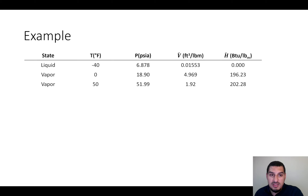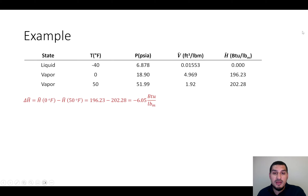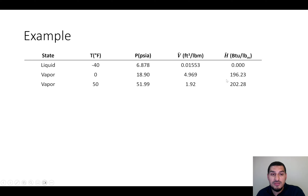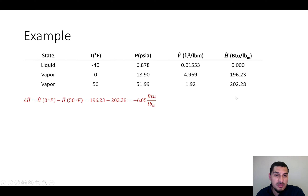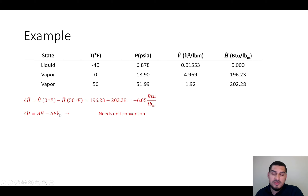The enthalpy equals zero at the reference state, so we identify it in the table. For the enthalpy difference when cooling from 50°F to 0°F: H1 is the enthalpy at 50°F and H2 is the enthalpy at 0°F. Delta H equals H2 minus H1, which is 196.23 minus 202.28. To calculate delta U, we use the relation delta U equals delta H minus delta PV, where delta PV is P2V2 minus P1V1. We know the specific volume and pressure from the table.